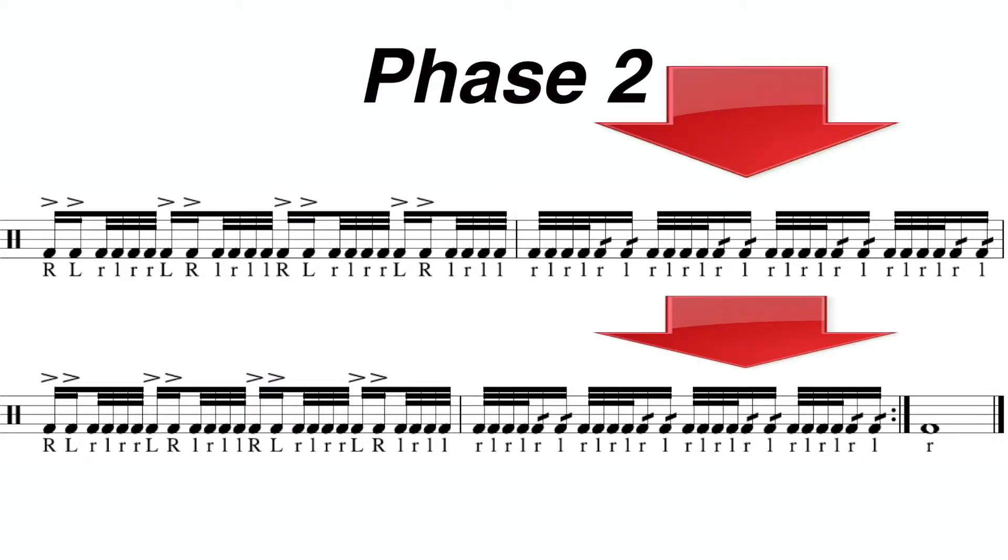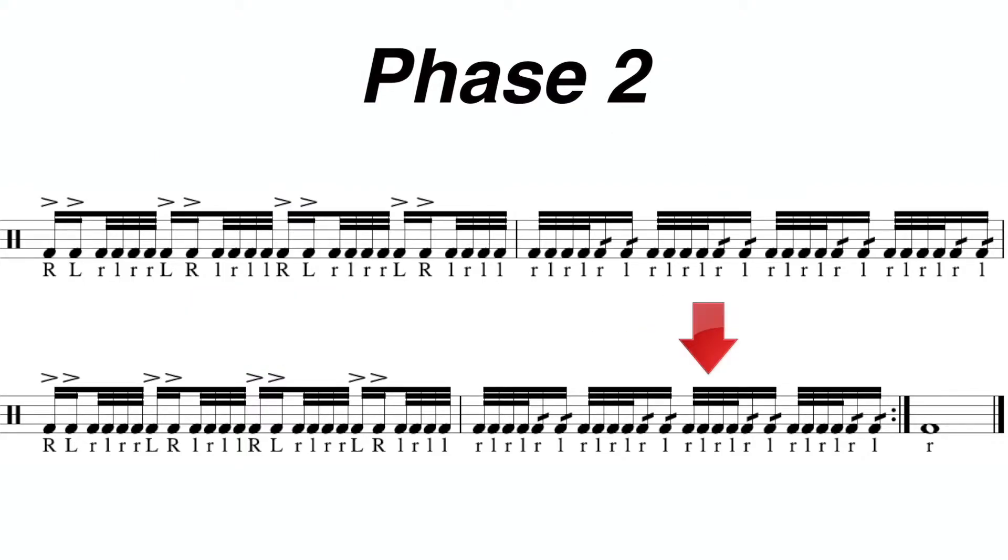essentially, you're going to play a single stroke 4, 32nd note based, merging into a 32nd note based 5 stroke roll. It's going to merge back and forth between the two rudiments for all 4 counts.